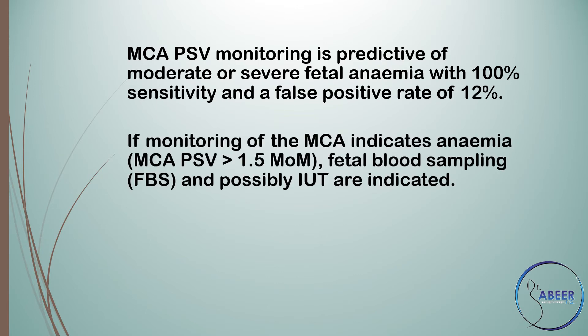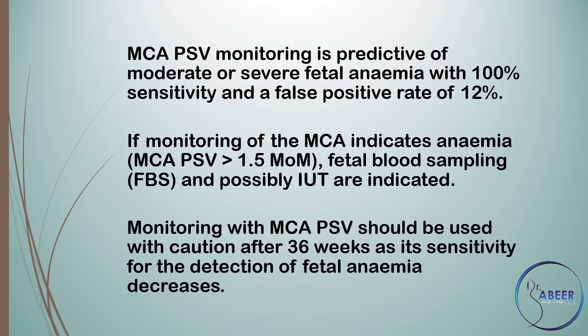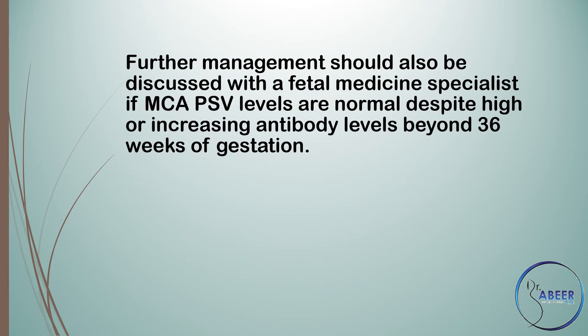If monitoring of the MCA indicates anemia — MCA PSV greater than 1.5 multiples of the median — fetal blood sampling (FBS) and possibly intrauterine transfusion (IUT) are indicated. Monitoring with MCA PSV should be used with caution after 36 weeks, as its sensitivity for detection of fetal anemia decreases. Further management should be discussed with a fetal medicine specialist if MCA PSV levels are normal despite high or increasing antibody levels beyond 36 weeks of gestation.